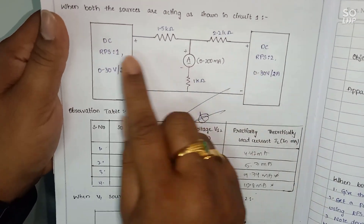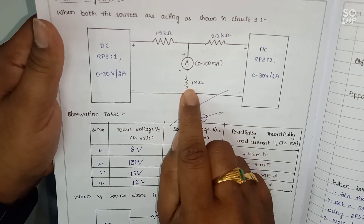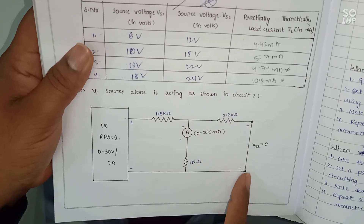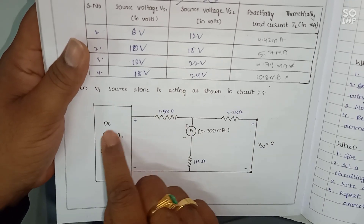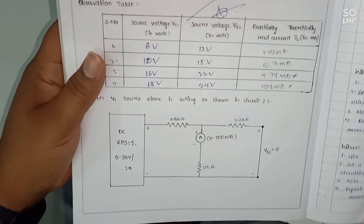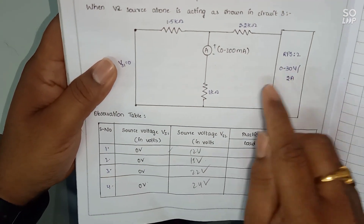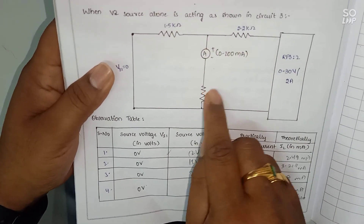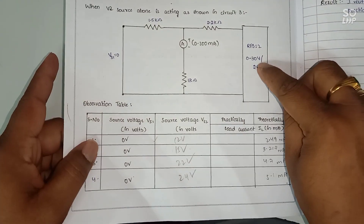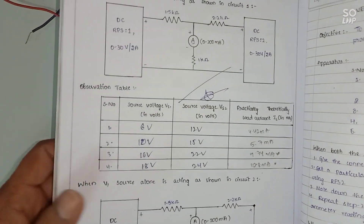This is the response when both the sources are acting. When both the sources are acting, we are finding the response in this one kilo ohm resistor. Next, we are short circuiting the second source by replacing it with a short circuit — voltage zero — and considering only VS1 source, finding the response in the same branch. Then VS1 is made short circuited, and with the help of VS2 we are finding the response. By adding the individual responses from VS1 and VS2, we are getting the total response.